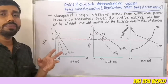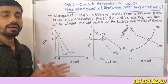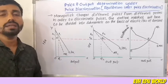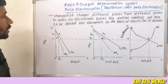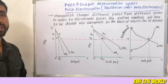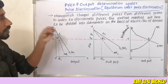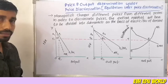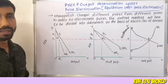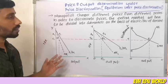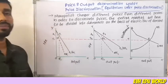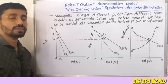In the case of a monopolist, we have different customers and different prices. The monopolist charges different prices from different persons. In order to discriminate prices, the entire market will have to be divided into sub-markets on the basis of elasticities of demand.